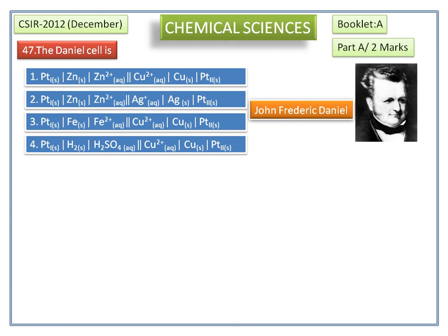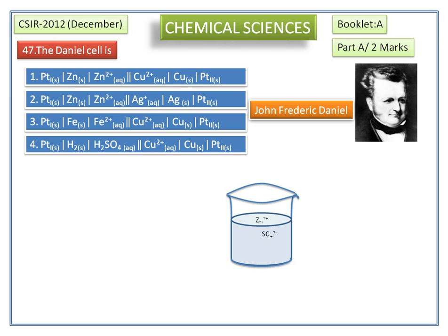It consists of two half cells. The half cell on the left side has zinc sulfate solution. Zinc sulfate is completely ionized into Zn²⁺ and SO₄²⁻. Here I consider two molecules of zinc sulfate. The number of zinc sulfate molecules depends upon the concentration of the solution. The zinc rod is dipped into the zinc sulfate solution, called the anode.